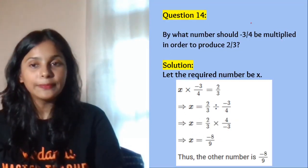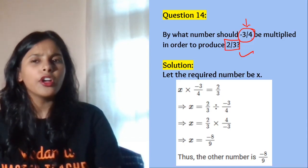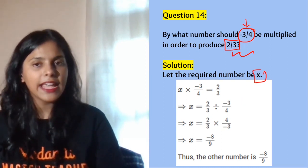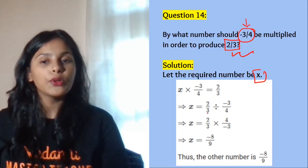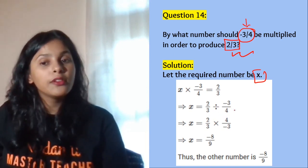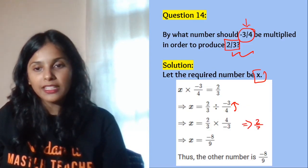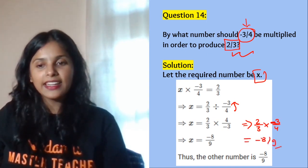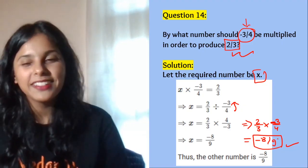Next question: what must you multiply a rational number by to get a given result? Let the unknown multiplier be x. Bring the known number to the RHS, so x equals 2 by 3 divided by minus 3 by 4. To convert division to multiplication, take the reciprocal: minus 3 by 4 becomes minus 4 by 3. So x equals 2 by 3 multiplied by minus 4 by 3, giving minus 8 by 9 as the answer.